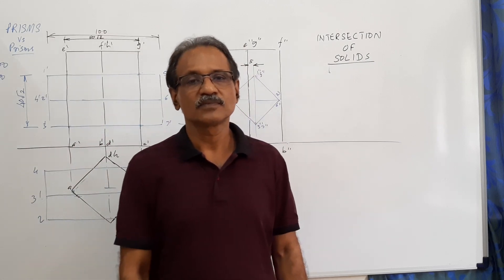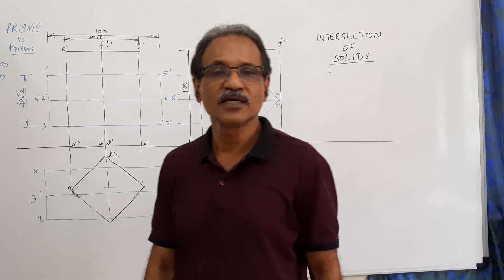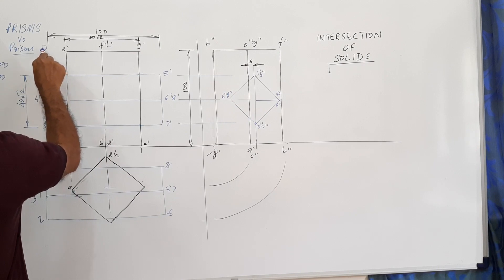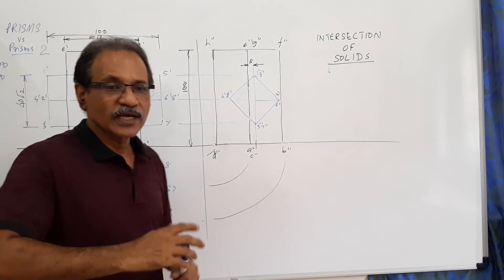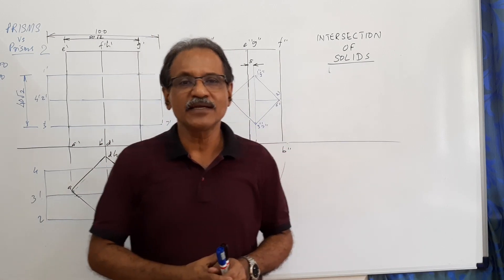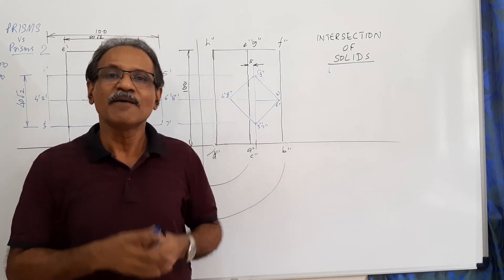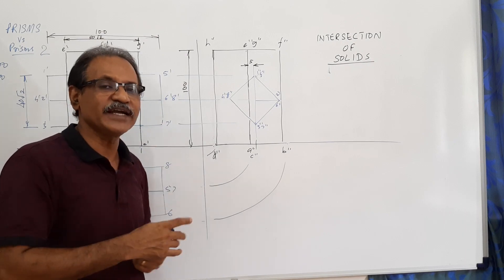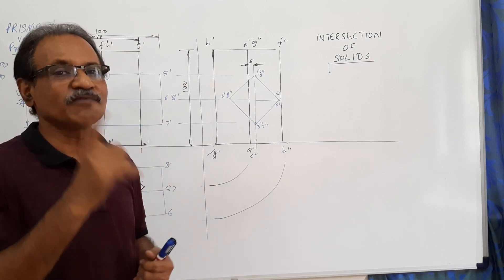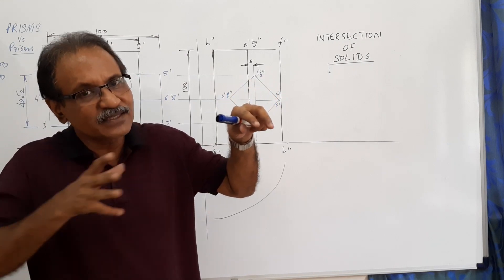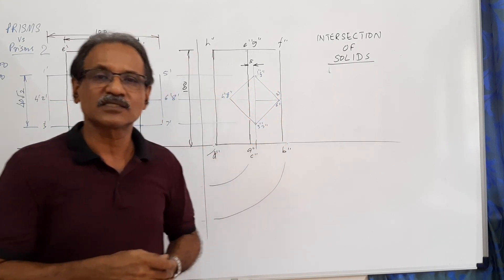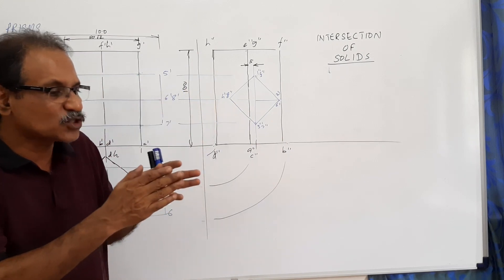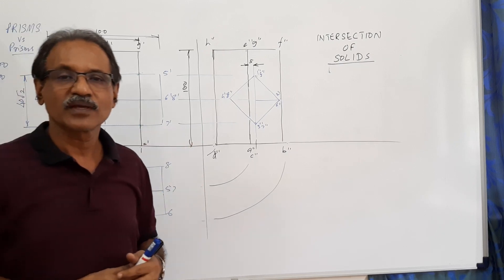Welcome to Engineering Graphics - Intersection of Solids: Prisms and Prisms 2. There is a vertical square prism penetrated by a horizontal square prism, but the two axes are not intersecting. In the first video (Prisms and Prisms 1), the horizontal prism axis was cutting the vertical prism axis. Here, the horizontal prism axis does not cut the vertical prism axis but passes 5 mm away.